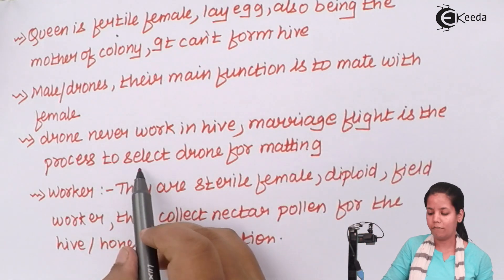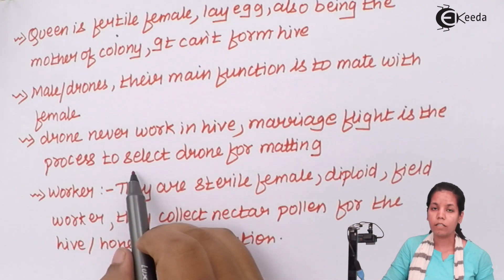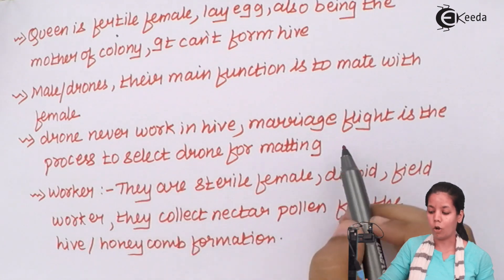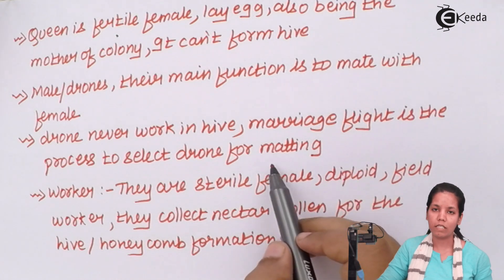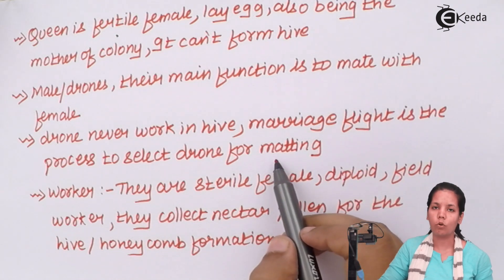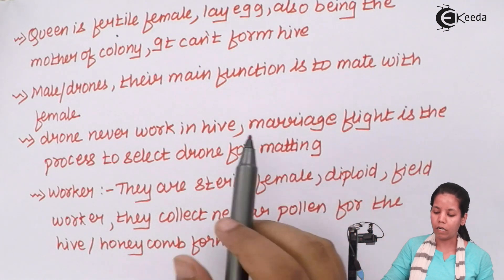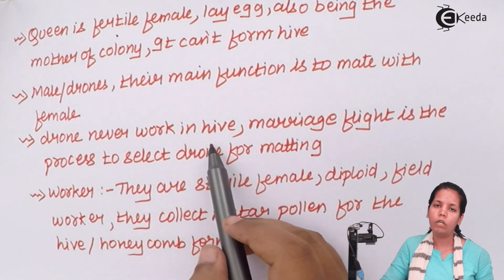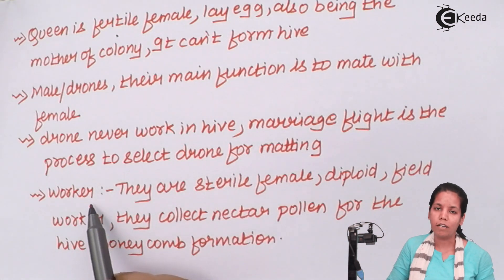Drones are never selected based on their ability to mate. It is always a competition called the marriage flight that is used to select the drone for mating purposes. Drones or males never work in the hive; they are only responsible for mating purposes.